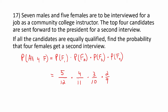We can reduce this. Five times two is 10, and four times three is 12. That leaves us with one over 99. Since every factor in the numerator canceled, we're multiplying one times one times one times one.